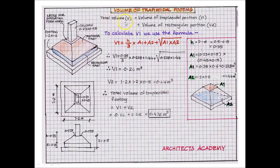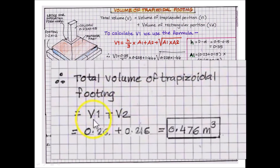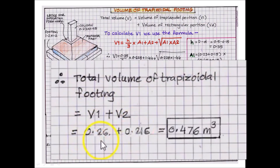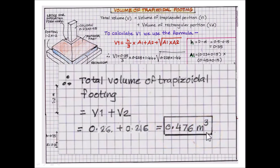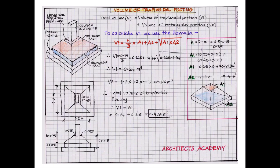The total volume equals the volume of the trapezoidal portion plus the volume of the rectangular portion: V1 + V2 = 0.26 + 0.216 = 0.476 cubic meters. That is how we calculate the volume of a trapezoidal footing.